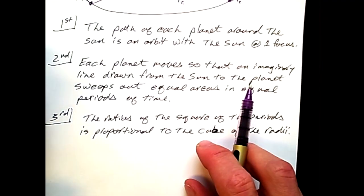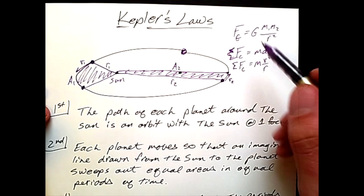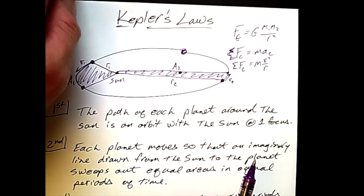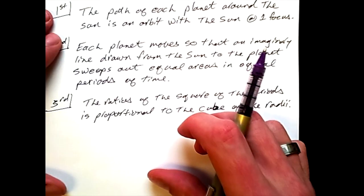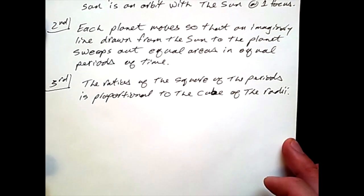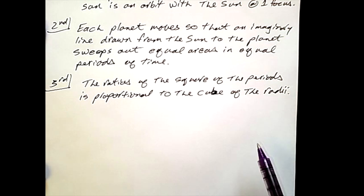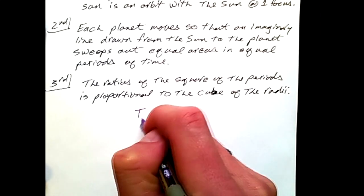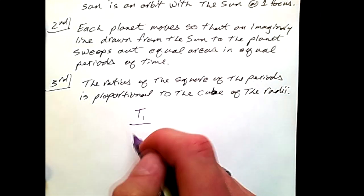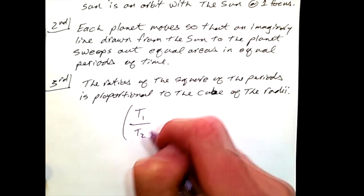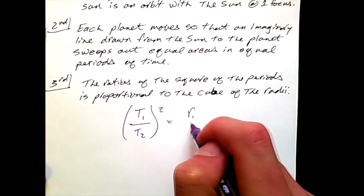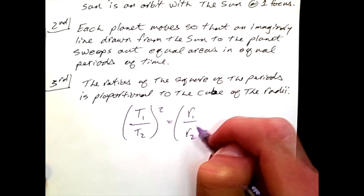Using these two formulas — gravitational attraction and centripetal force — Kepler was able to derive his third law. The third law is that the ratio of the square of the periods is proportional to the cube of the radii. Written mathematically, this would be: T1 over T2 squared is equal to R1 over R2 cubed.